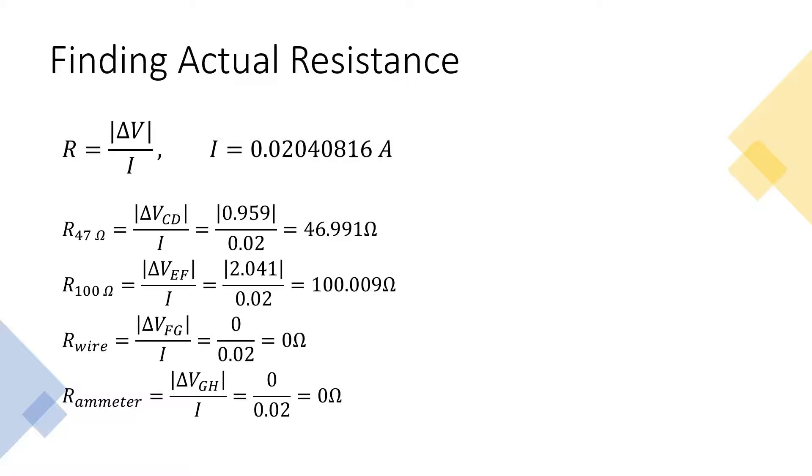We rewrite Ohm's law expression to solve for R, resistance, and use the value I for current as the unrounded calculated value from the original circuit setup. We find that the resistance in the 47 ohm resistor is 46.991 ohms, the resistance in the 100 ohm resistor is 100.009 ohms, and the resistance in the wire and ammeter are both 0 ohms.